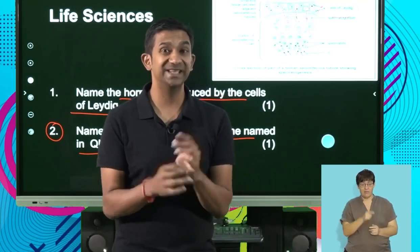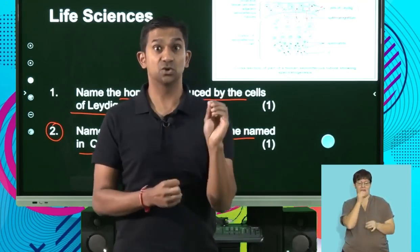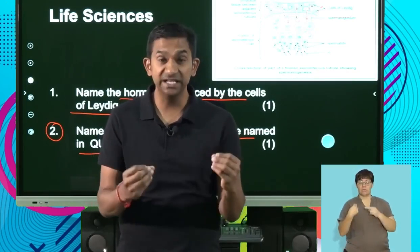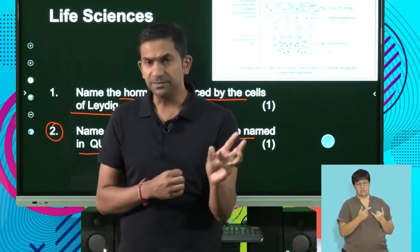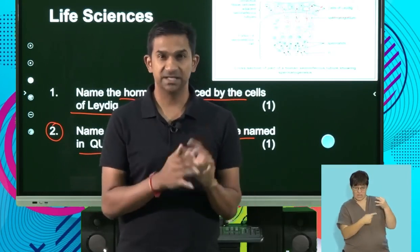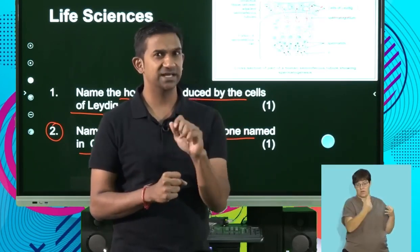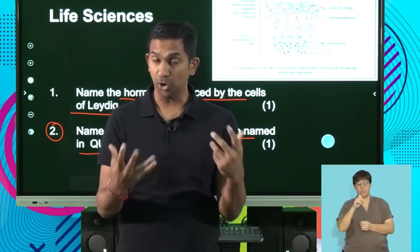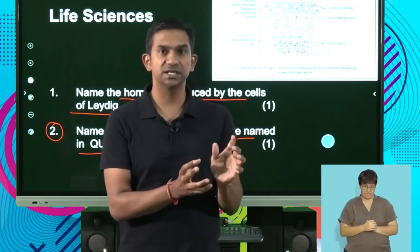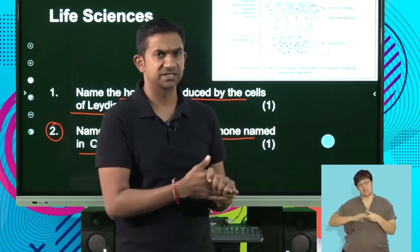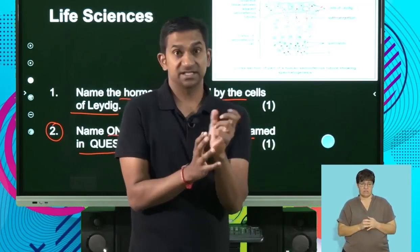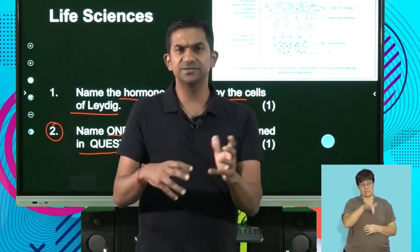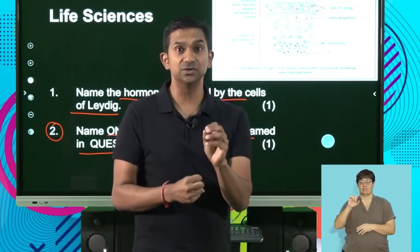Question two: name one function of the hormone mentioned in question one — testosterone. Testosterone is important in maintaining male characteristics, stimulates the development of sperm, and at puberty is responsible for the development of secondary sexual characteristics, such as muscle development, growth of pubic and body hair, and deepening of the voice. Try not to give two similar functions — give one relating to puberty and another relating to testosterone's general role in sperm formation.